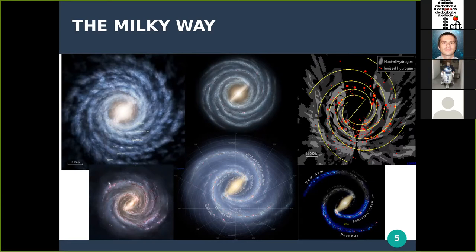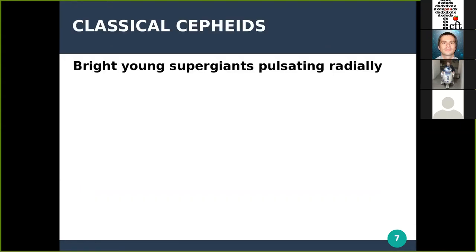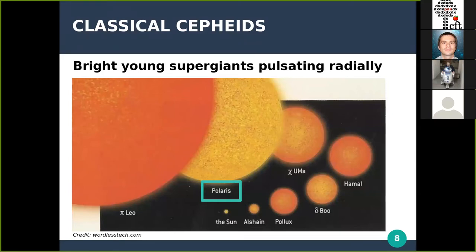Ideally, we would like a sample of objects that can map the Milky Way without assuming any physical quantities about our galaxy. There are such stars — variable stars called classical cepheids. They are very bright, young supergiant stars that pulsate radially. An example of the closest classical cepheid to us is the north star, Polaris. Just below it is the sun, to compare what it's like to be a main sequence star versus a bright supergiant classical cepheid.